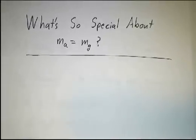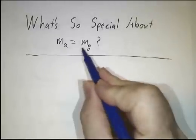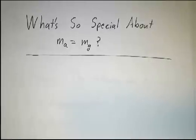In our last video, we stated some criteria for a matrix to be diagonalizable. And it boiled down to algebraic multiplicities being the same as geometric multiplicities. In this video, we're going to examine why that's really true.